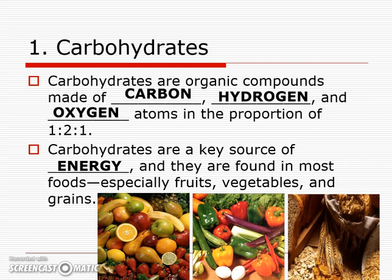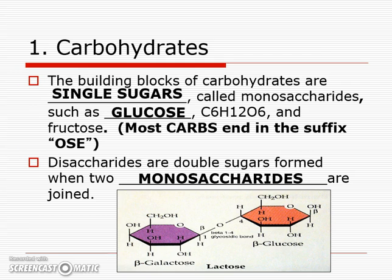Carbohydrates are the body's key source of energy. When glucose — aka a carbohydrate — can't get into a cell, you feel tired and hungry all the time. We learned about that with diabetes. You can find carbohydrates in things like grains and starches, as well as fruit and vegetables. And not all carbs are created equally — in class, we'll learn about simple and complex carbs and how they feed your body differently.